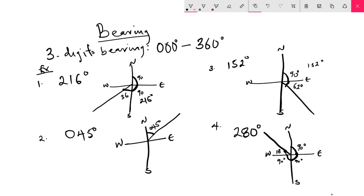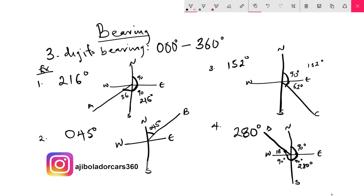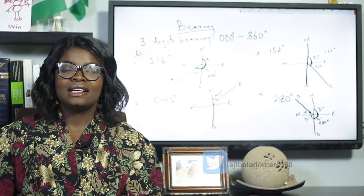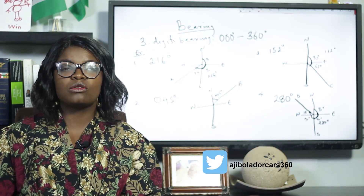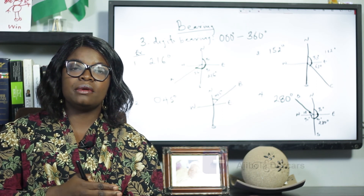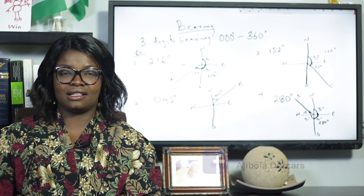We can label each point: the first example is point A, the second is point B, the third is point C, and the fourth is point D. So from the north to point D is 280 degrees in total. All these are examples of three-digit bearing. That will be all for now. Stay tuned for the other parts where we will discuss how to convert three-digit bearing to acute angle bearing and vice versa. Thank you.